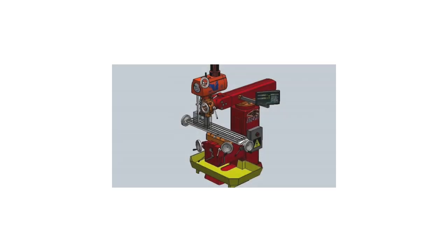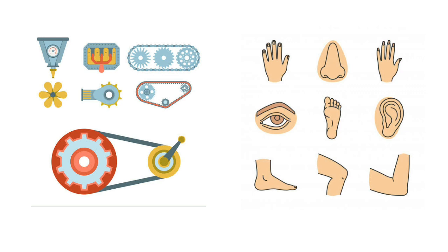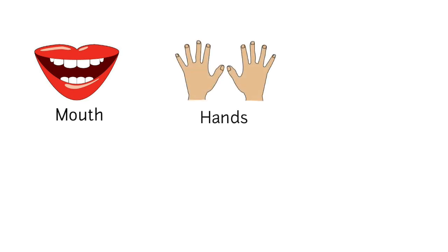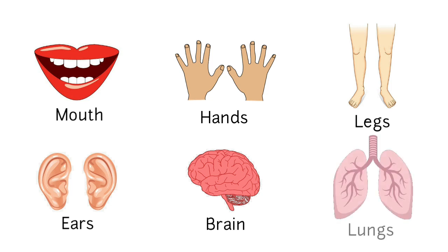You know children, our body is like a living machine. Just like a machine, our body also has many different parts. Some are big and some are small, such as mouth, hands, legs, ears, brain, lungs, and many more.